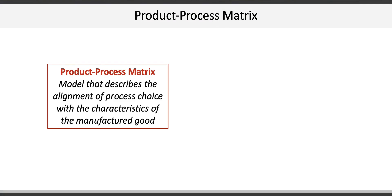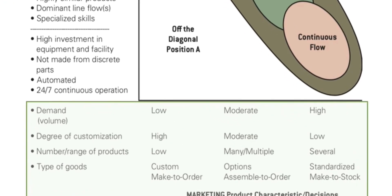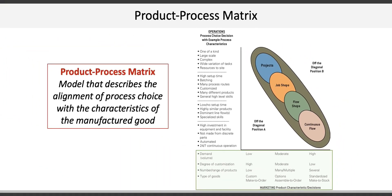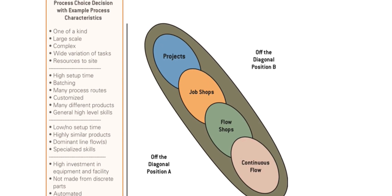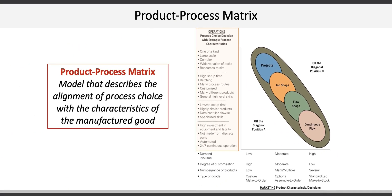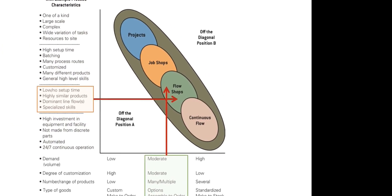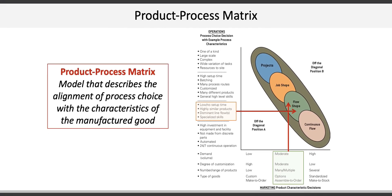The next concept is the product-process matrix, which is a model that describes the alignment of process choice with the characteristics of the manufactured good. On this diagram, the horizontal axis represents product characteristics such as demand, degree of customization, number or range of products, and the type of good. The vertical axis represents the range of product variety. A product in a 24/7 continuous operation would have low variety, whereas a custom built shelf would represent high variety. For example, an assemble-to-order product with moderate demand where the products are highly similar and require low or no setup time would likely be a flow shop — this describes a McDonald's operation quite well.